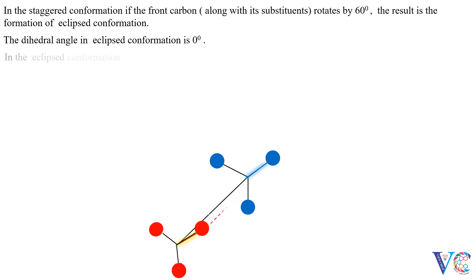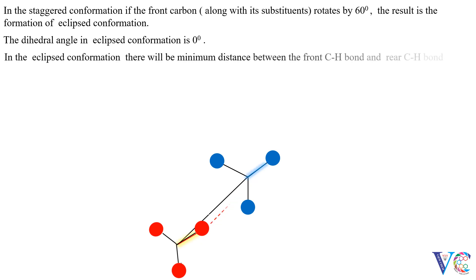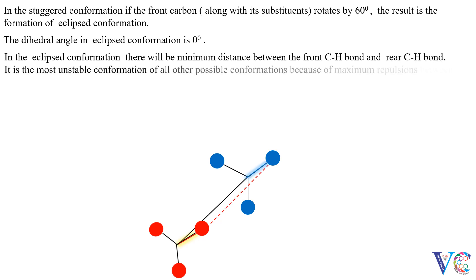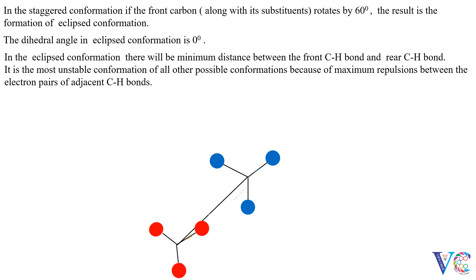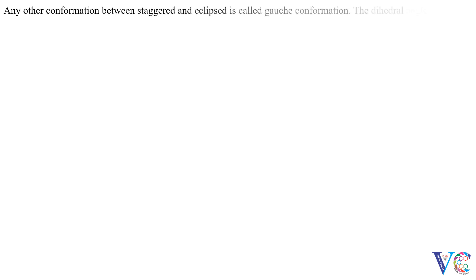In the eclipsed conformation, there will be minimum distance between the front C-H bond and the rear C-H bond. It is the most unstable conformation of all other possible conformations, because of the maximum repulsions between the electron pairs of adjacent C-H bonds. Any other conformation between staggered and eclipsed is called gauche conformation. The dihedral angle of gauche conformations will be more than 0 degrees and less than 60 degrees.